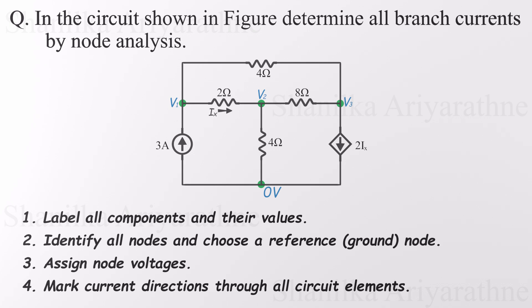Next up, we assign current directions and voltage polarities throughout the circuit. Let's start with the current sources. Their directions are already marked with arrows, so we'll stick with those. In one branch, we've got a 3-amp independent source. And in another, there's a dependent current source labeled 2IX. That IX is the current through a specific resistor.